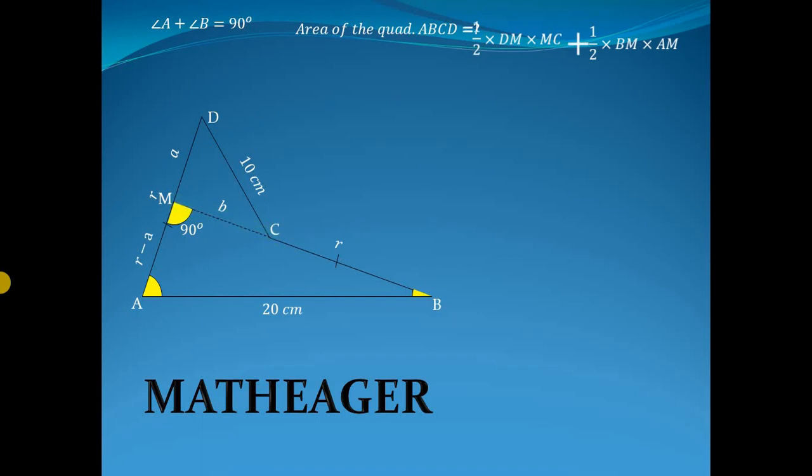Substituting these values we get: half into the magnitude of DM, which is a, into the magnitude of MC, which is b, plus half into the magnitude of BM, which is r plus b, into the magnitude of AM, which is r minus a.